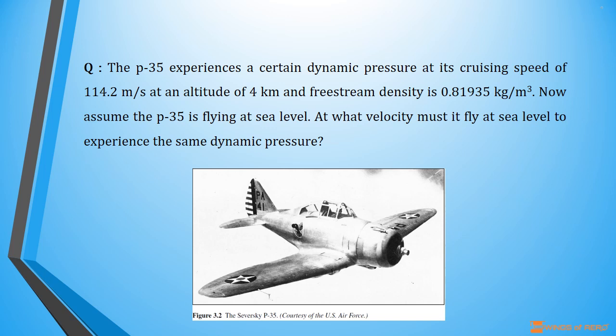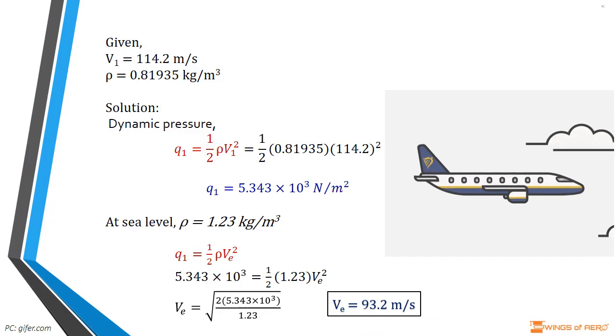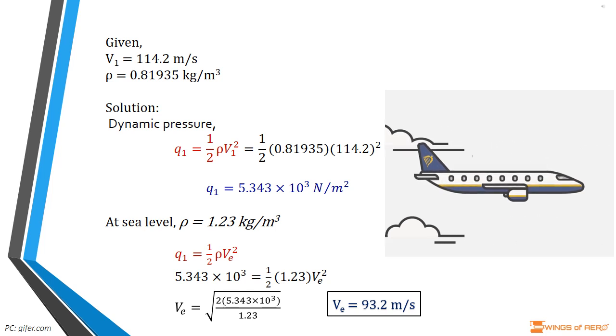Given data: here an aircraft is flying at cruising speed v₁ = 114.2 meter per second at 4 kilometer altitude and free stream density ρ = 0.81935 kilogram per meter cube.